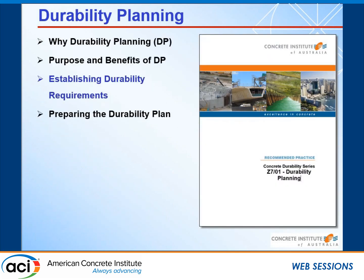The first document we put together is called Durability Planning, Z701. The main reason this was the first document is that specifiers needed something they could start a durability specification with. Durability planning is something that some of our leading experts in Australia have become more involved in — we now have consulting groups who specify specifically in durability planning. This document has been out in our marketplace for a while. We like to say in Australia these documents are like a boomerang — they've got to come back.